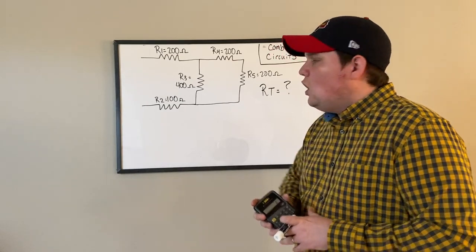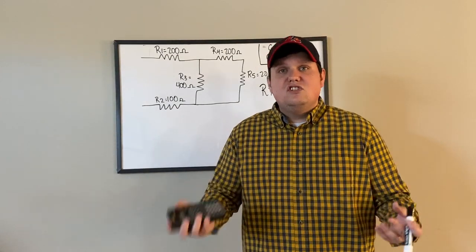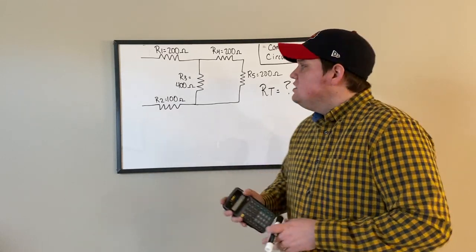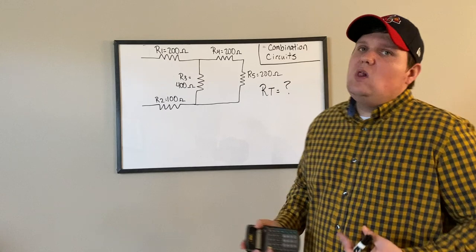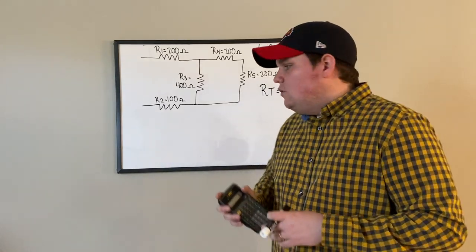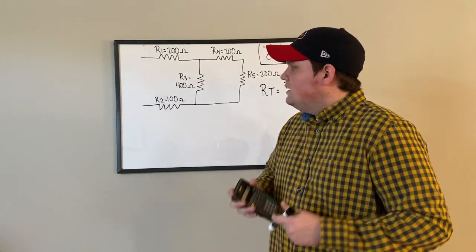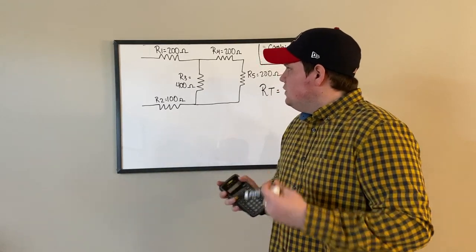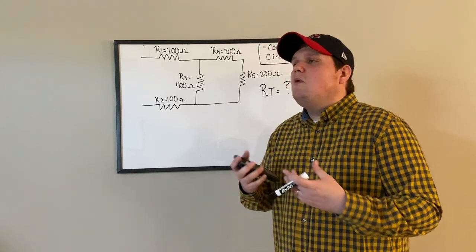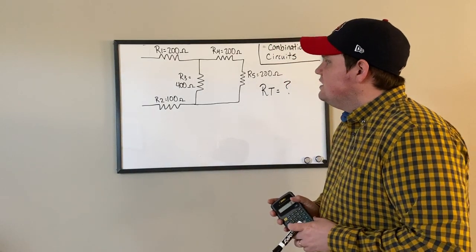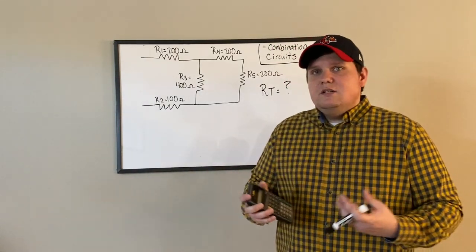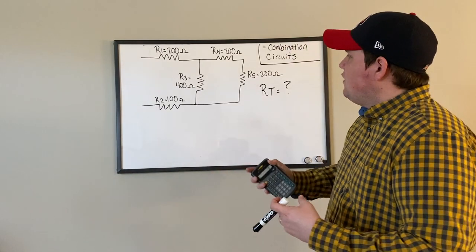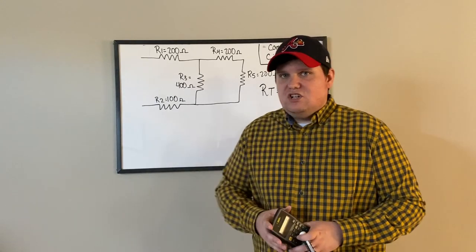Now looking at parallel portions — in parallel we sometimes call that a current divider circuit. With that being said, current has multiple paths to take, so the individual currents will add up to total current. For instance, if I have two resistors in parallel with each other with two amps through each one,